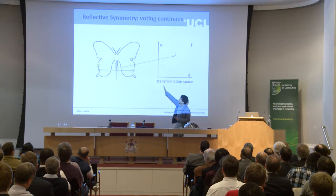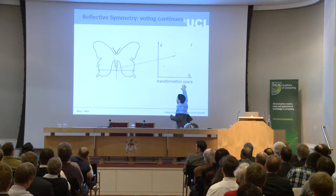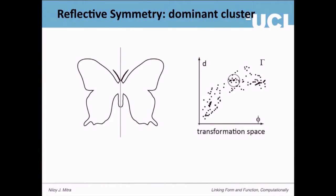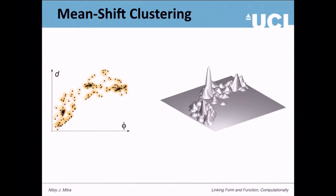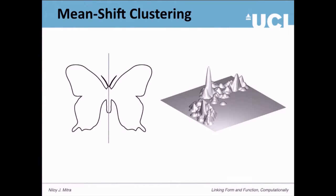If we continue voting like this, a line that is not the symmetric line casts a vote somewhere else. In the end, we have a collection of points, and looking at the dominant cluster reveals the multiple lines that voted for the same thing. The partially symmetric part will also cast a vote and lead to a lower peak. The tall peak comes from the dominant butterfly symmetry; smaller ones from partial symmetry. There's subtlety in how many samples we need, which can be worked out probabilistically under some noise model.